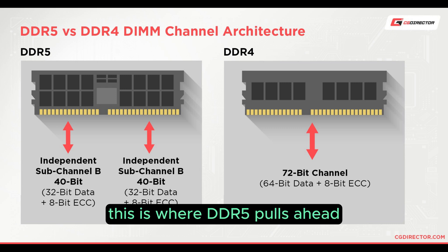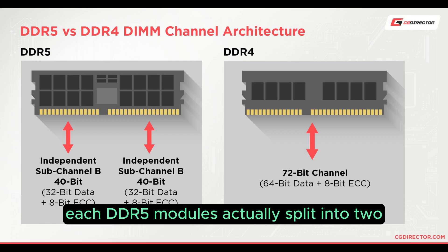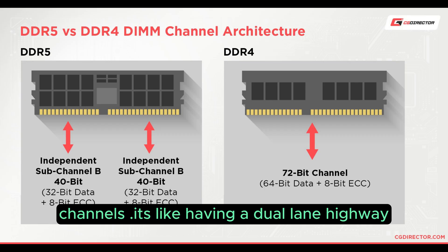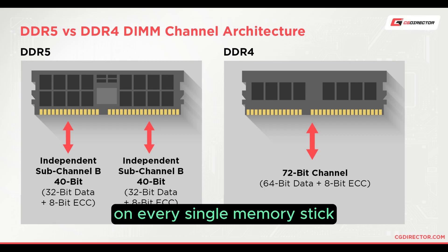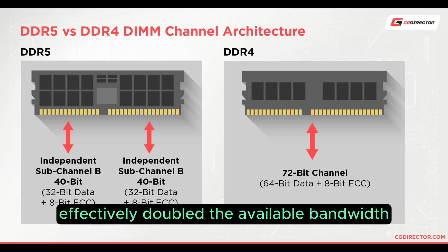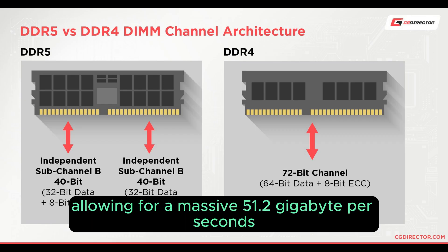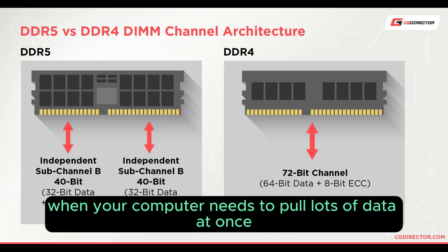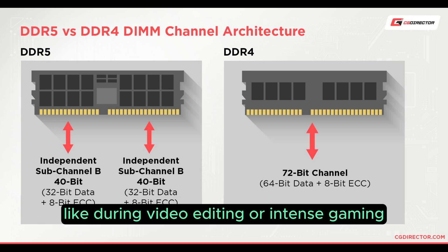This is where DDR5 pulls ahead. Each DDR5 module is actually split into two independent 32-bit channels. It's like having a dual-lane highway on every single memory stick. This new design effectively doubles the available bandwidth, allowing for a massive 51.2 GB per second or more. For you, that means less waiting when your computer needs to pull lots of data at once, like during video editing or intense gaming.